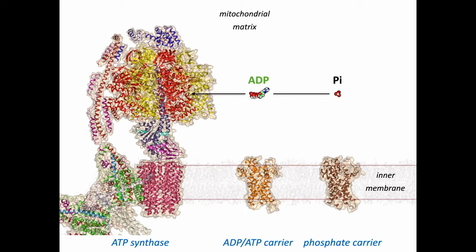These two molecules then diffuse to the catalytic site of ATP synthase, where rotation of the central stalk fuses them together to form ATP, which is then expelled from the site by another rotation.